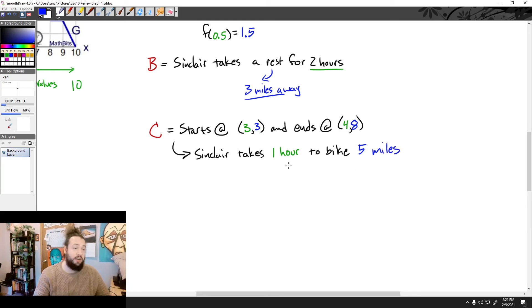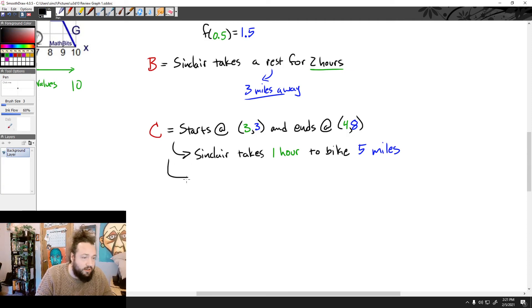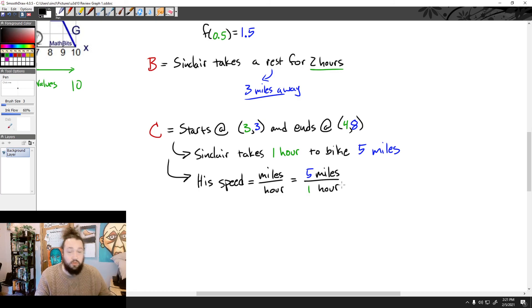So actually, if you wanted to know a speed here, we could even say how fast Sinclair is going. Because all we have to do is say his speed equals miles per hour. So in other words, I went 5 miles per 1 hour. So I was going 5 miles an hour. All right? Which is not too bad for a speed. Stay clear! Stay clear!